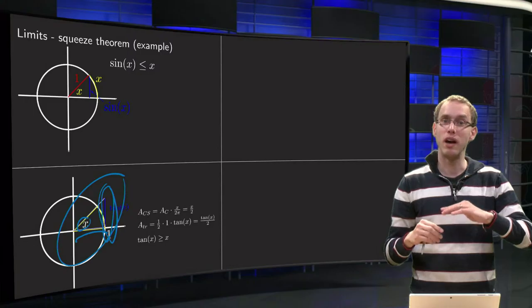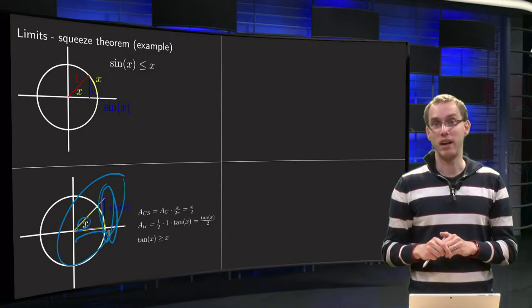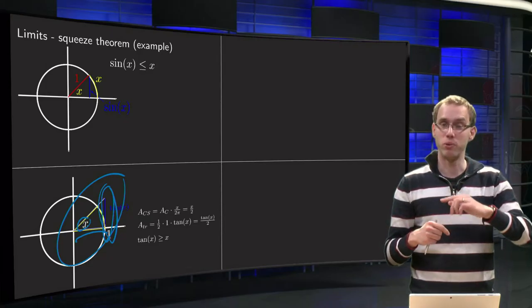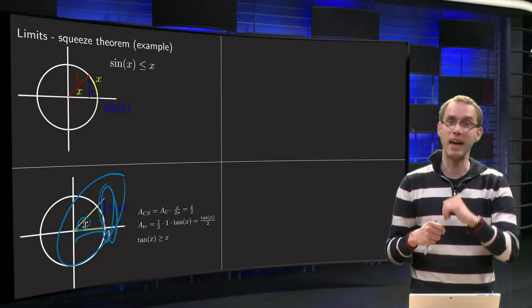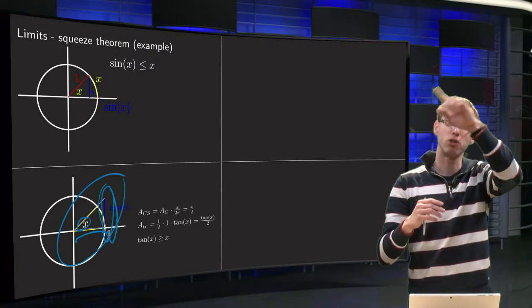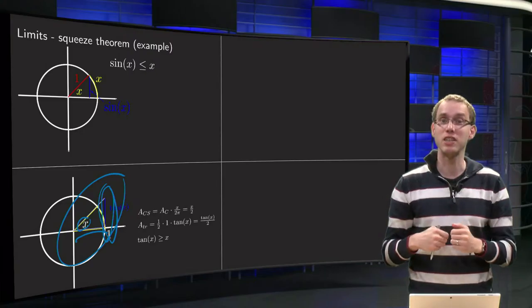And then we also have the area of the part of the circle. While the total area of the circle is just pi, what part of the circle do you have? Well you go over an angle of x, so the part of the circle is x, total circle equals 2 pi, so the part of the circle is x over 2 pi.